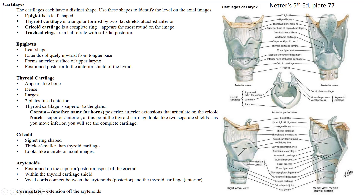The cricoid cartilage is more circular, often compared to a signet ring — thicker on one side and narrower on the other. The arytenoids sit superior to the cricoid like little fingers extending off it, on its posterior surface. The corniculate cartilages are extensions off the arytenoids, extending superiorly like little fingers off the arytenoid cartilages.